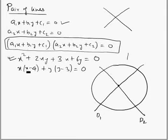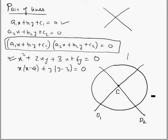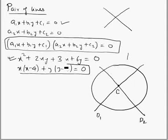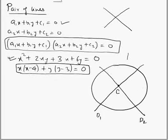We'll solve the two lines simultaneously and get the center of the circle. Once we have the center, to find the equation of the circle, we also need the radius. For the radius, it is mentioned that the size of the circle is such that it just contains a given circle — meaning the required circle touches the given circle internally.